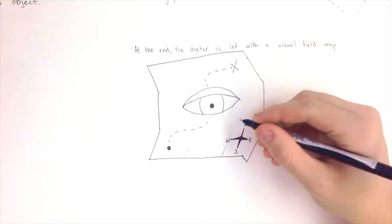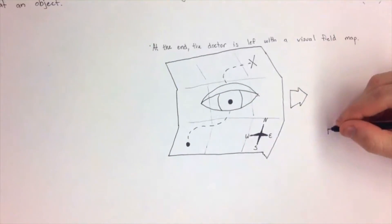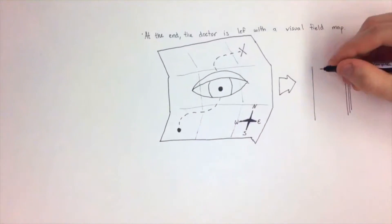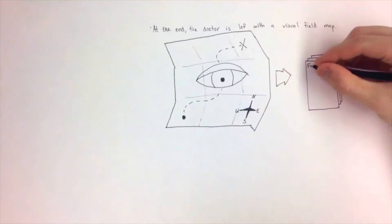At the end of the test, the doctor is left with a visual field map, which is the final basic report indicating the patient's visual field anywhere from the central 10 degrees all the way out to the farthest reaches of the field at 90 degrees.